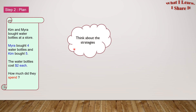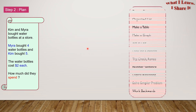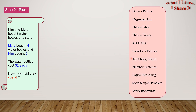Now think about the strategies. So here are all the strategies: draw a picture, organize a list, make a table, make a graph, act it out, look for a pattern, try-check-revise, number sentence, logical reasoning, solve a simpler problem, and work backwards. We will use the number sentence strategy here.